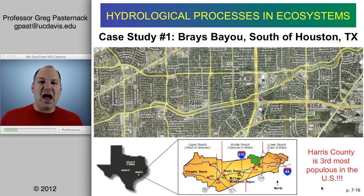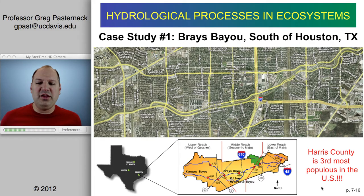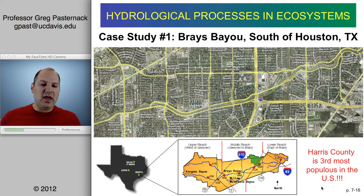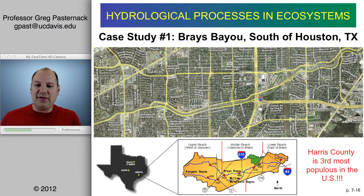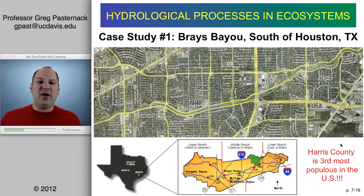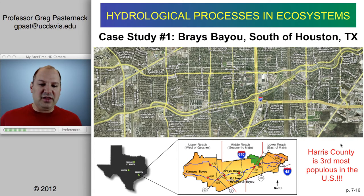To illustrate the hydrological response to urbanization, let's look at a case study from Brays Bayou, south of Houston, Texas, located in Harris County — the third most populous county in the United States. When you look at the Google Earth image with roads shown, you can see that road infrastructure is always a powerful visual signature of urbanization on the landscape.